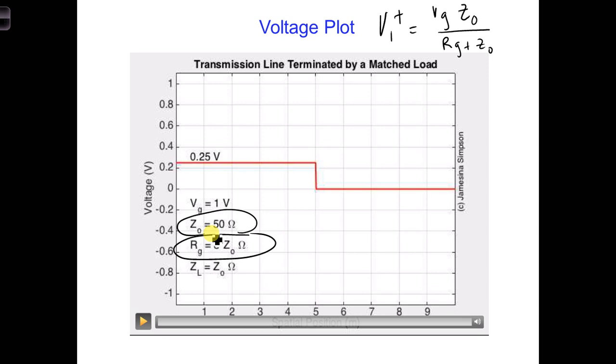And 3 times Z-naught plus Z-naught, we get 1 over 4, which is equal to 0.25 volts. So now we know where the 0.25 volts comes from.